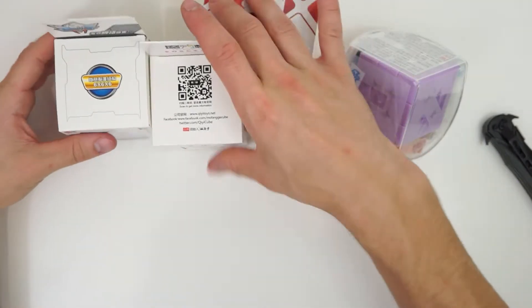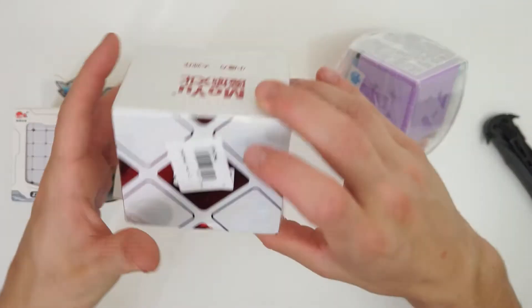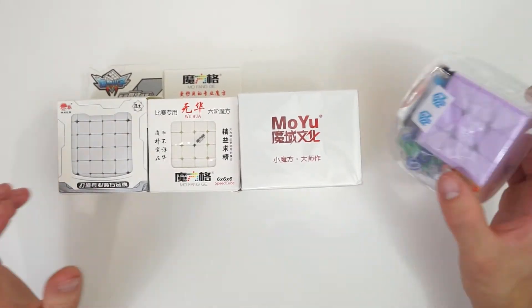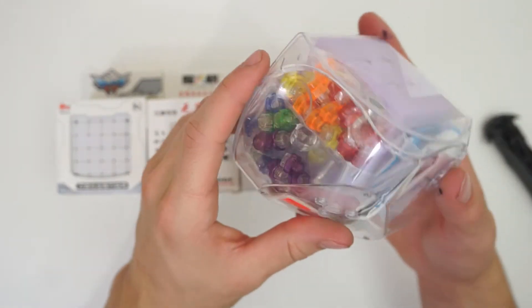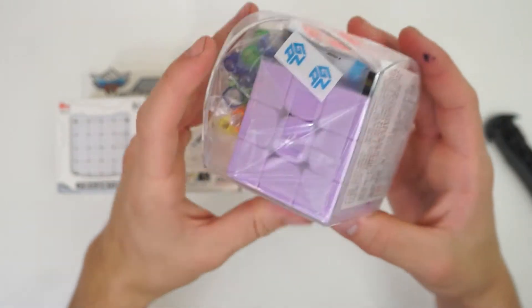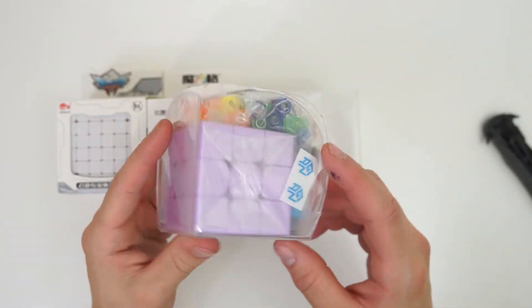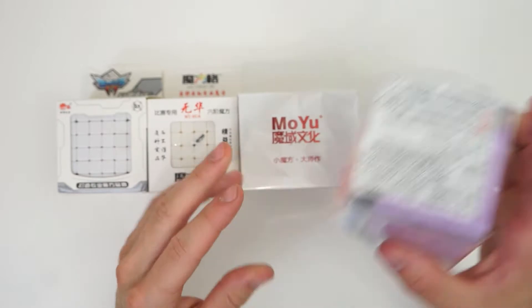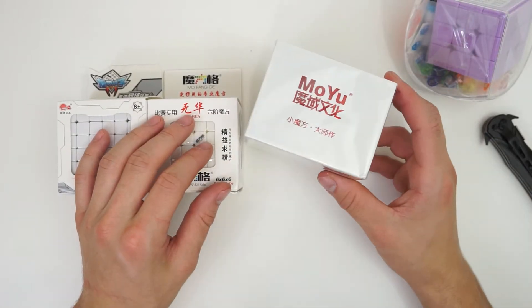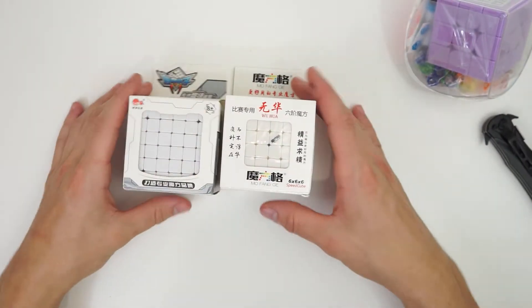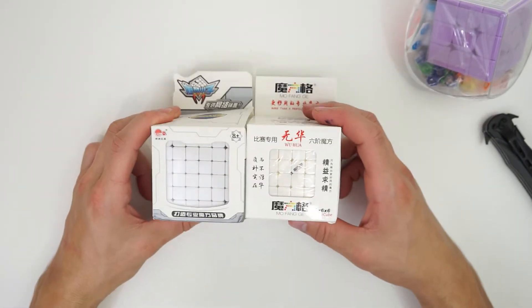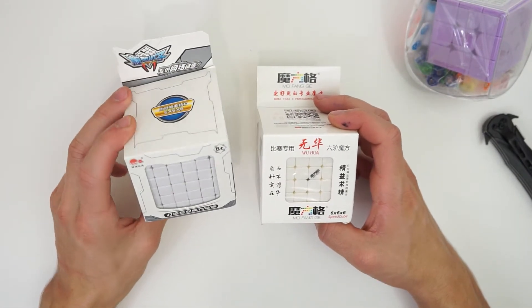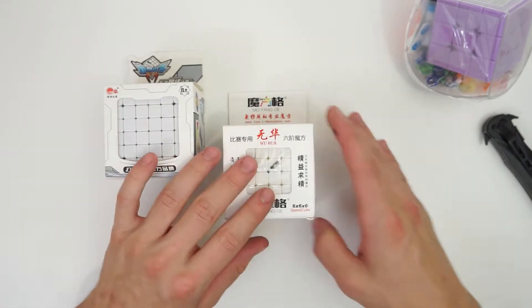Okay, so as you can hopefully see here, we have four puzzles. We have the Gans Air 356 in purple to add to my collection. We have the Moyu Weilong GTS 2, and then we have not one, but two 6x6s. This is the Cyclone Boys 6x6 G6, and this is a Stickerless Wuhua.